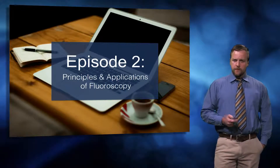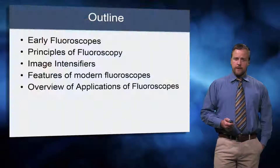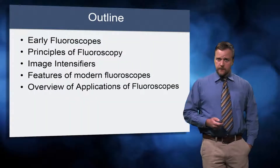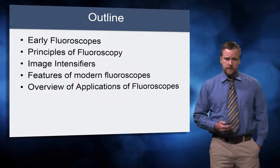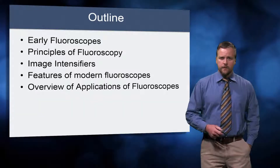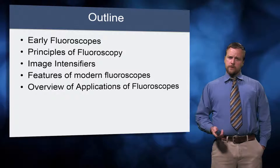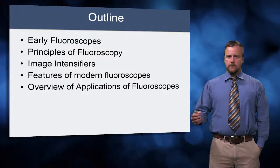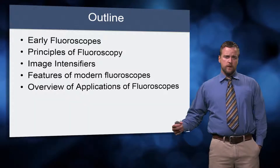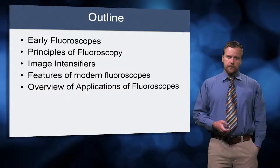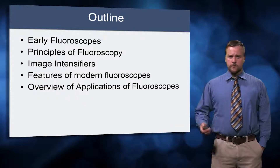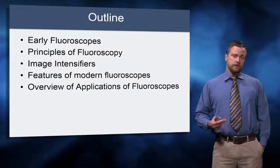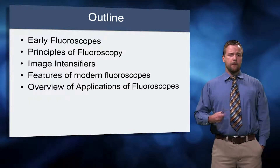This episode is titled Principles and Applications of Fluoroscopy. We are going to be talking about the earliest fluoroscopes — the first ones that people developed — and the principles of how they work: how we convert x-rays produced by an x-ray tube, projected through a patient, onto some kind of screen or detector, and how we turn that into a visible image that our eyeballs can see.